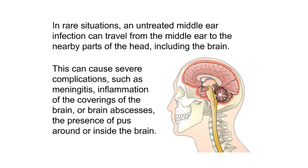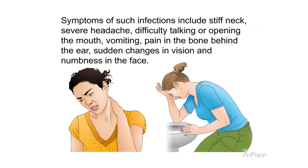In rare situations, an untreated middle ear infection can travel from the middle ear to nearby parts of the head, including the brain. This can cause severe complications such as meningitis — inflammation of the coverings of the brain — or brain abscesses, the presence of pus around or inside the brain. Symptoms of such infections include stiff neck, severe headache, difficulty talking or opening the mouth, vomiting, pain in the bone behind the ear, sudden changes in vision, and numbness in the face.